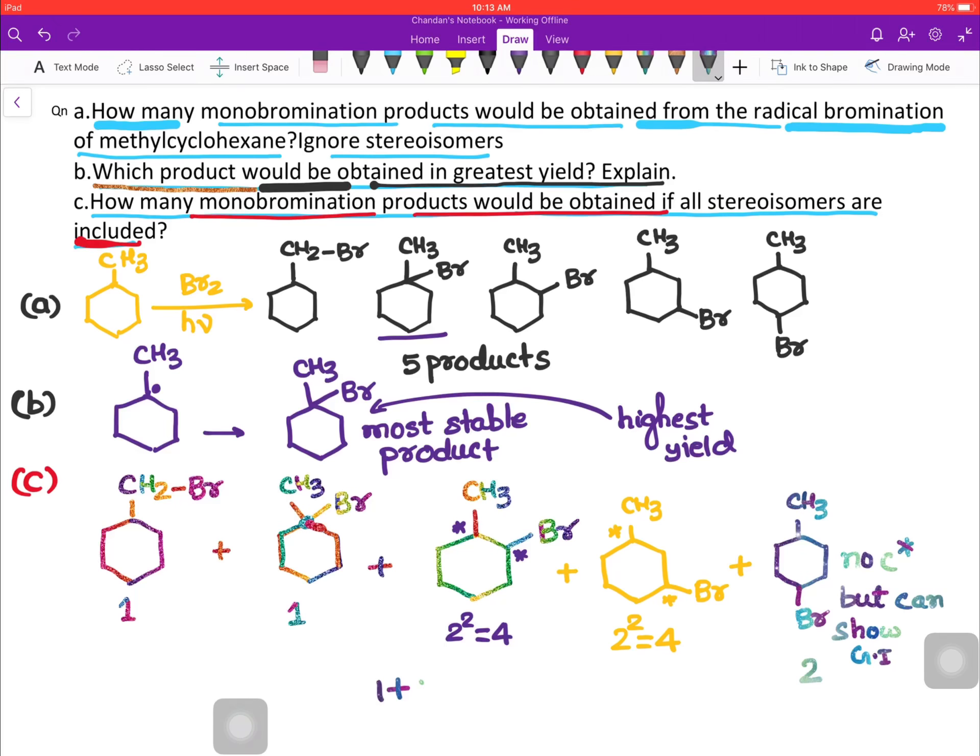So if you sum them, that is 1 + 1 + 4 + 4 + 2, the total number of stereoisomers we are getting is 12. So the correct answer for part C is 12.